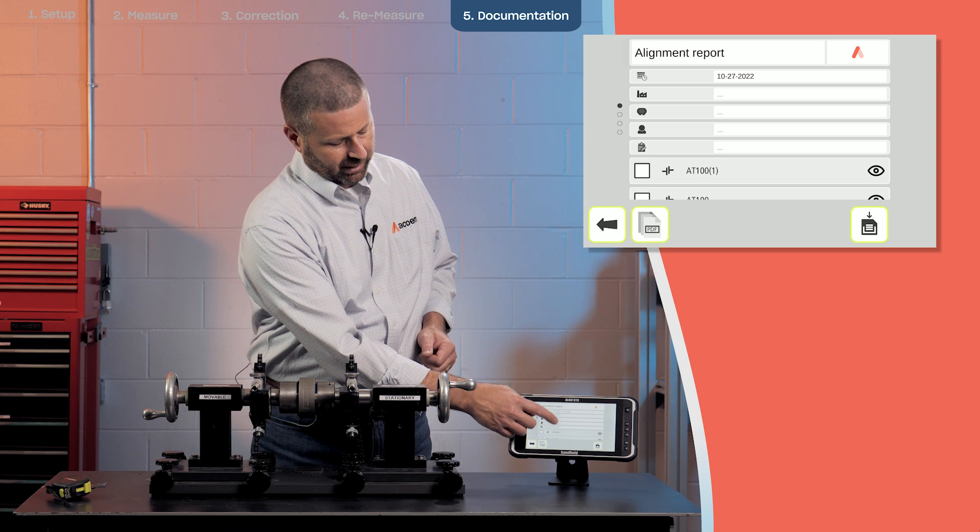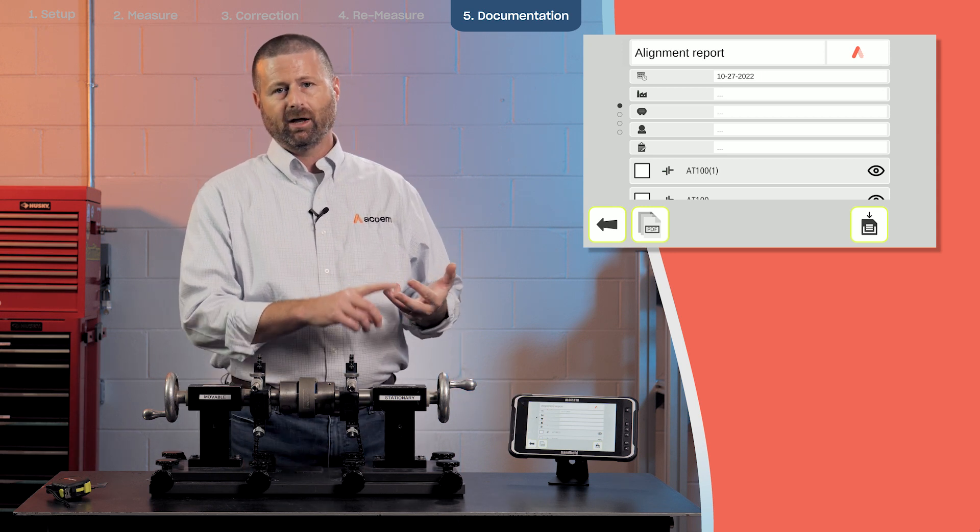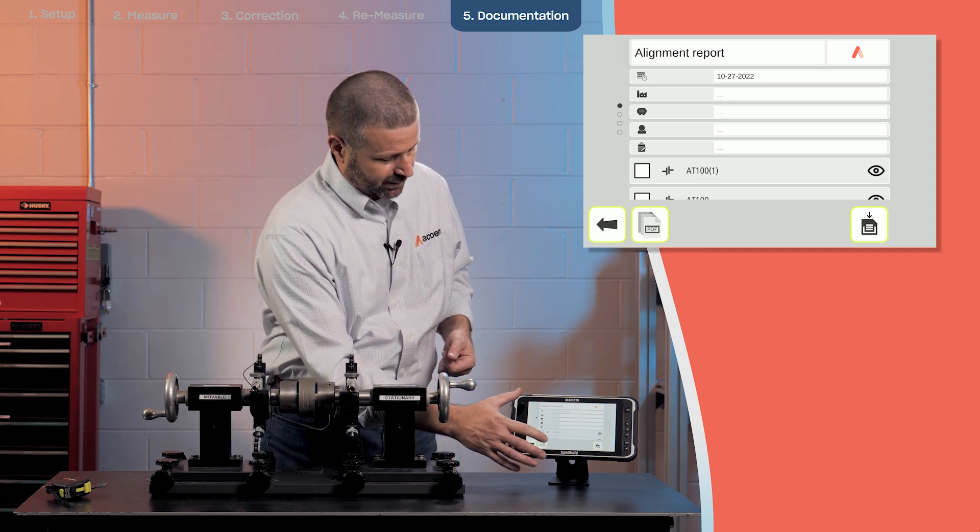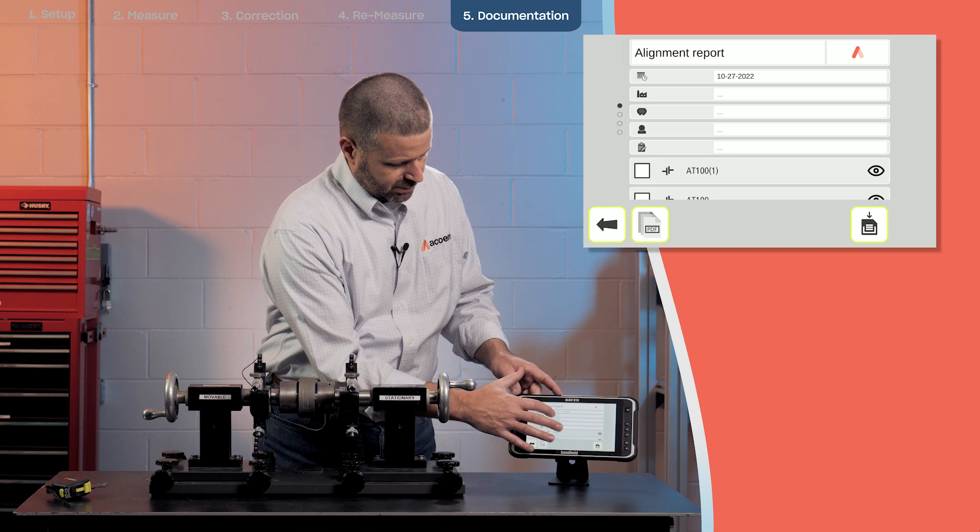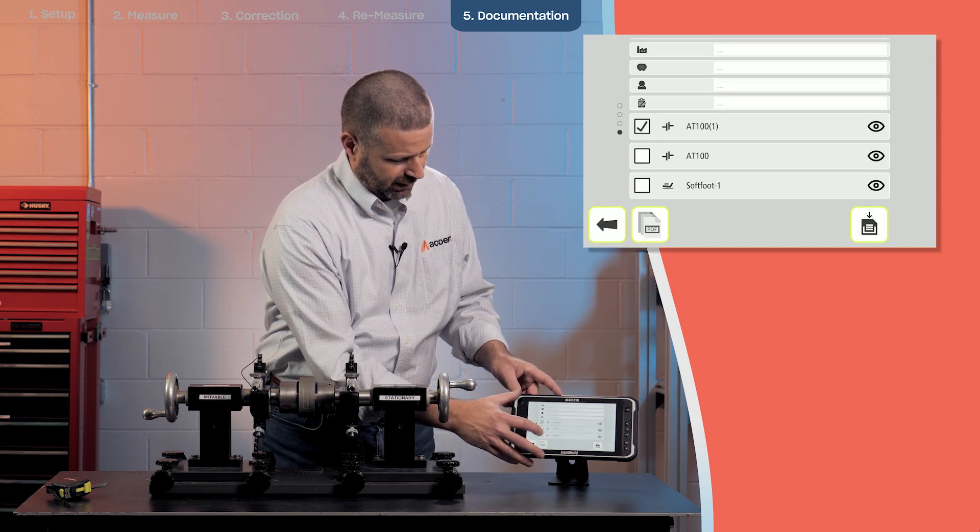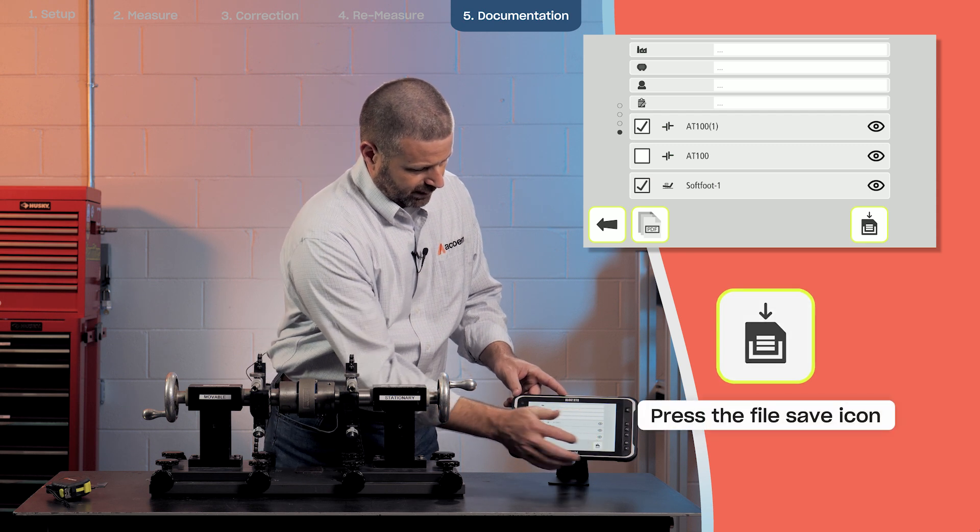There are several lines available for putting a plant name in, a user name in, a machine name, and any machine notes that you may have. And so we'll select the AT100 and soft foot and then save it.